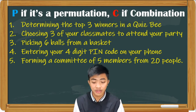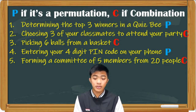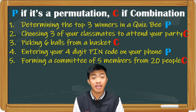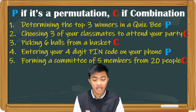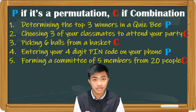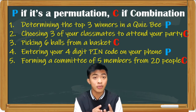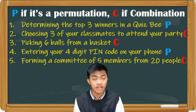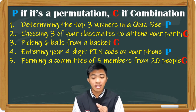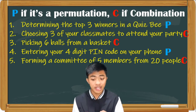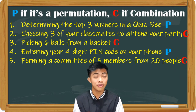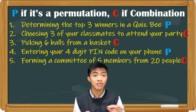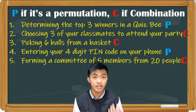Let's reveal the correct answers. Number one and four are permutations. For number one — determining the top three winners in a Quiz Bee — since it says 'top three winners,' there is first, second, and third place. There is a rank, there is an arrangement of winners, so that is a permutation. Number four — entering a PIN code on your phone — we have to follow the arrangement of the digits, so that is also a permutation.